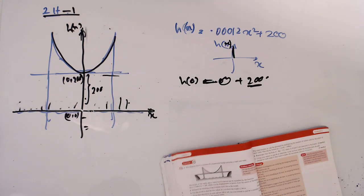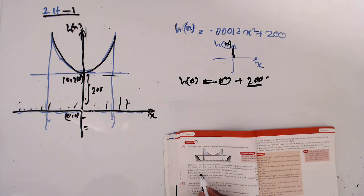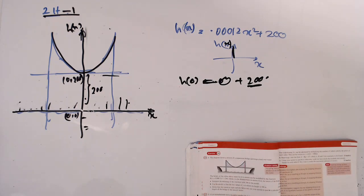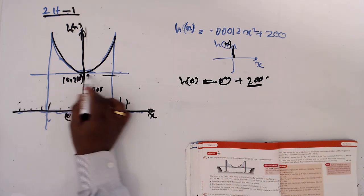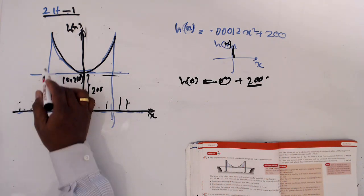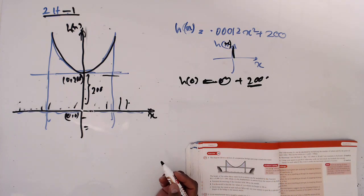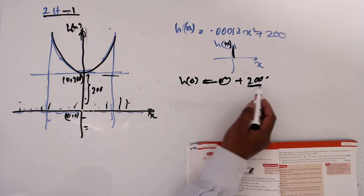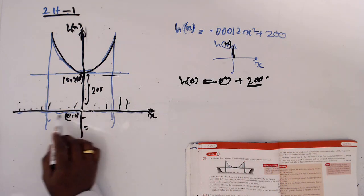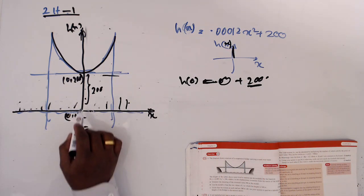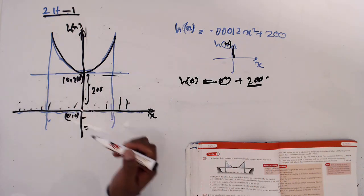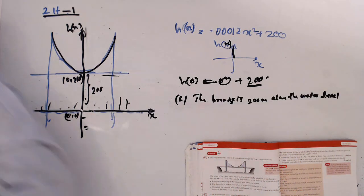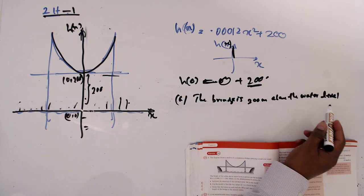Now we can answer the first question: 'Interpret the meaning of the constant term 200 in the model.' We already found that when x equals 0, h equals 200. This means the bridge lies 200 meters above the water level. So the answer is: the bridge is 200 meters above the water level.